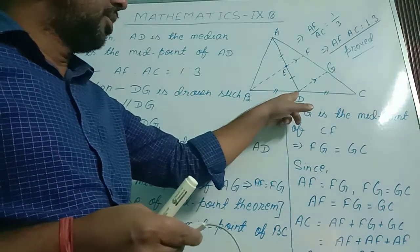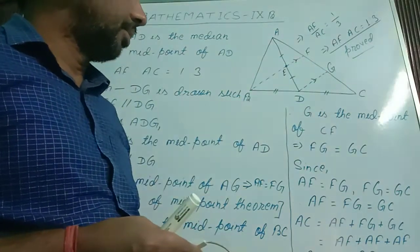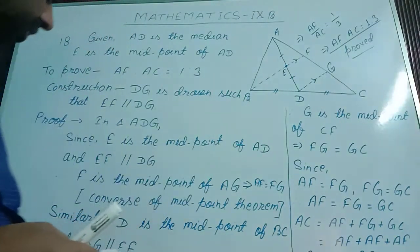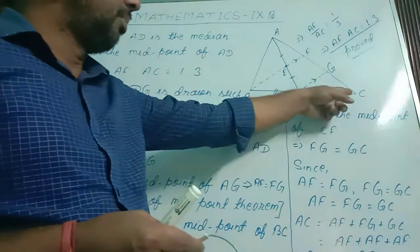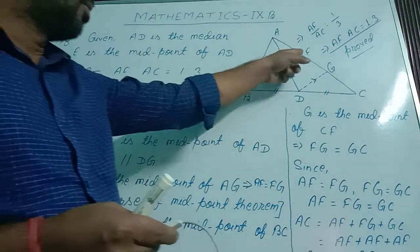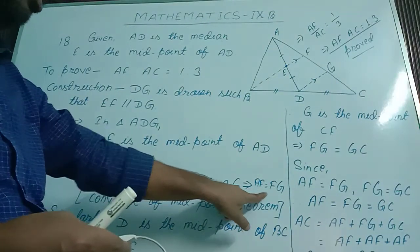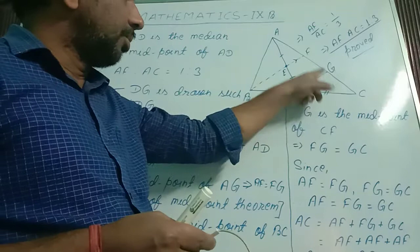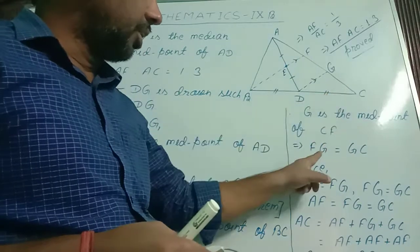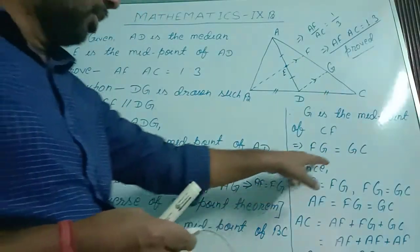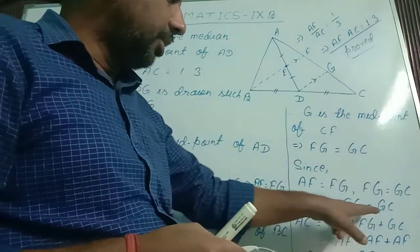Similarly, by the midpoint theorem, G becomes the midpoint of CF, while F is the midpoint of AG. In that case we can write AF equal to FG. Since G is the midpoint of CF, we can write FG equal to GC. So from these two results: AF equal to FG and FG equal to GC, therefore AF equal to FG equal to GC.